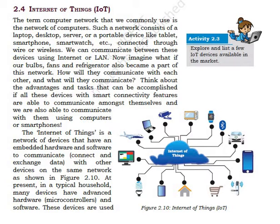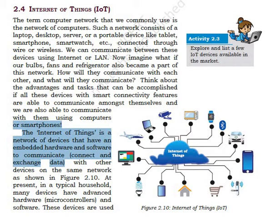This is called Internet of Things. In Internet of Things, we are creating a network of devices that have embedded hardware and software to communicate. We are enabling all the devices which we use on a daily basis — electronic devices — through the network. If we are connecting all these devices with the Internet, then without using direct interaction, we can communicate with them through our mobile phone or through the Internet.